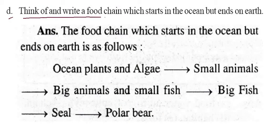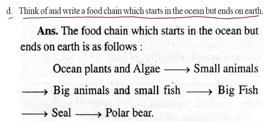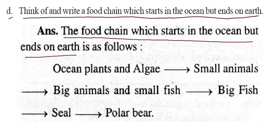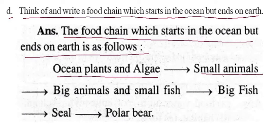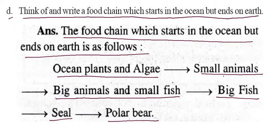Think and write a food chain which starts in the ocean but ends on land. The food chain which starts in the ocean but ends on the earth is as follows: ocean plants and algae are eaten by small animals, small animals are eaten by big animals and small fishes, big animals and small fishes are eaten by big fishes, big fishes are eaten by the seal, and the seal is eaten by the polar bear.